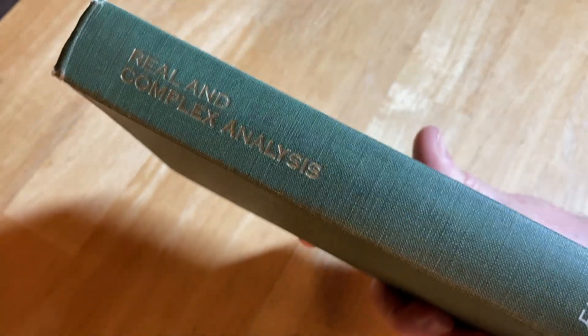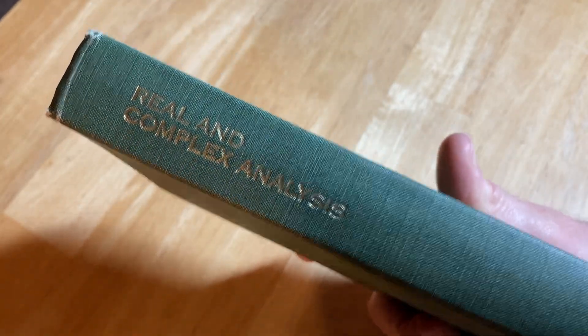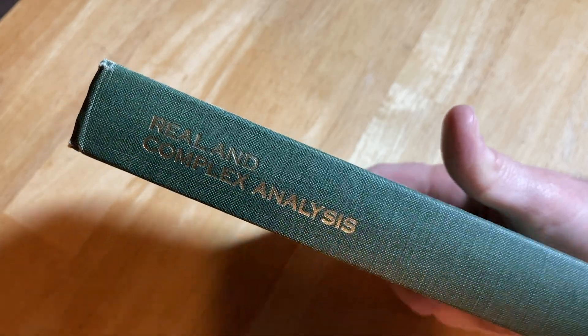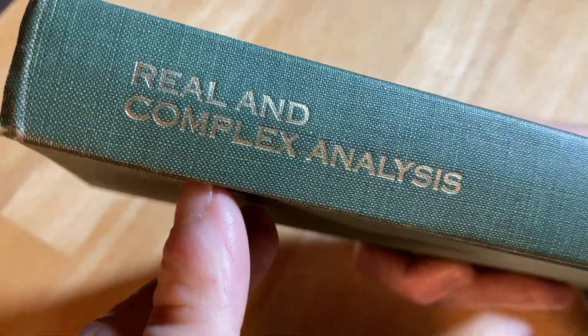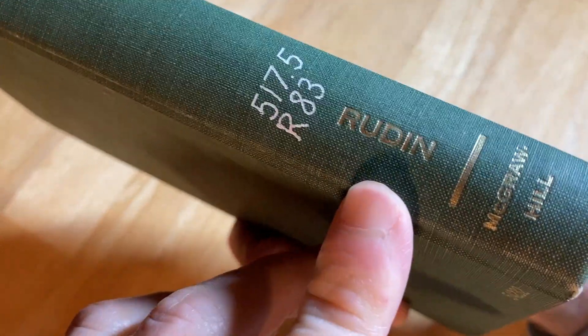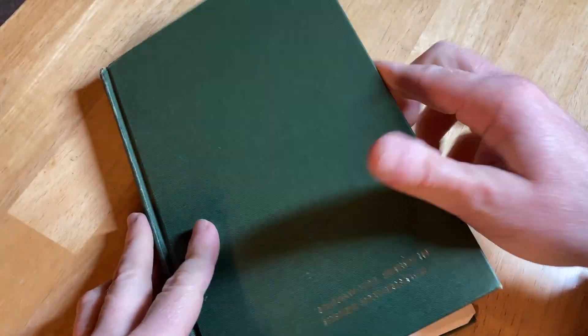This book is so famous it has a nickname. People call it Papa Rudin. It's called Real and Complex Analysis and was written by Walter Rudin.